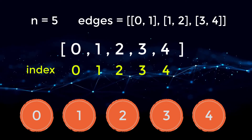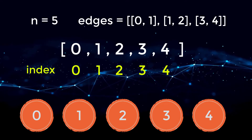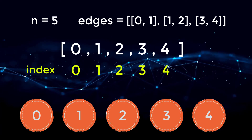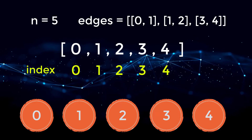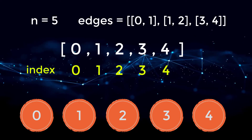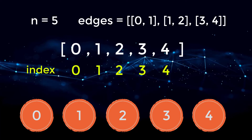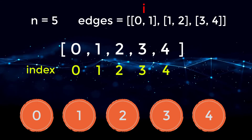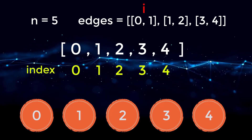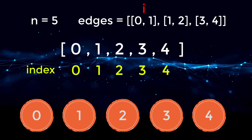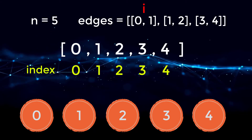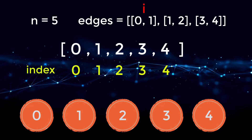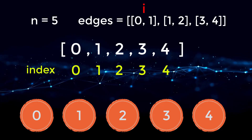Now we loop over all the edges we were given and merge those subsets together. By the end of iterating over these edges and performing merges, we should have only two subsets — where zero, one, two is one subset, and three, four is another. Starting with the first edge zero-one, we need to merge the zero and one subsets into one. Zero is connected to one, so they should be part of the same subset.